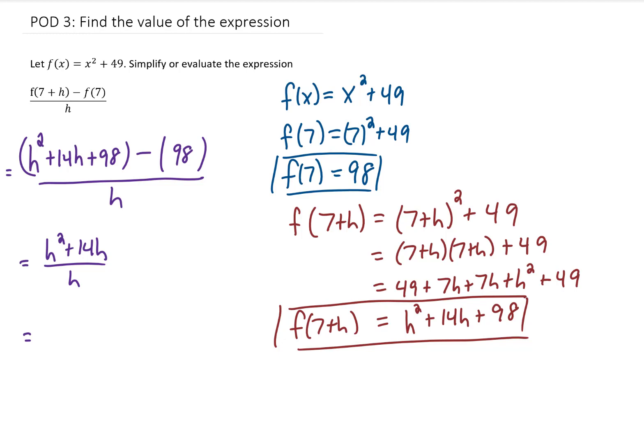Now there's a couple ways to cancel this h from the denominator. One way is to look at the numerator and realize we can factor an h out. If we factor an h out of the numerator, we end up with h times the quantity (h + 14). Now this factor of h in the numerator can cancel with that factor of h in the denominator. And we are left with a final answer of h + 14.